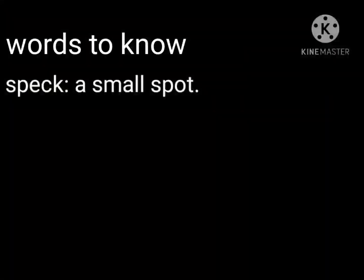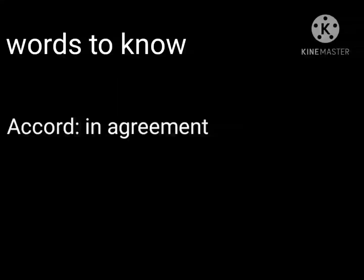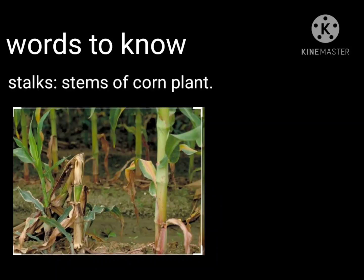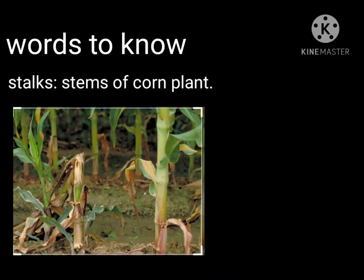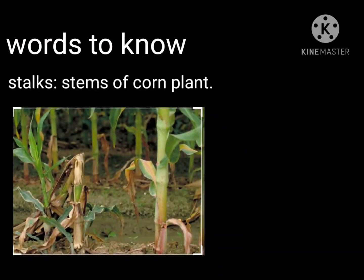Speck means a small spot — एक छोटे से dot की तरह होता है speck। Accord means in agreement, according to something — किसी चीज़ के अनुसार। Next is stalks, S-T-A-L-K-S. Stalks means stems of the corn plant — corn plant का जो stem वाला हिस्सा है। Stem you must have studied in your science also — that is called stalks.